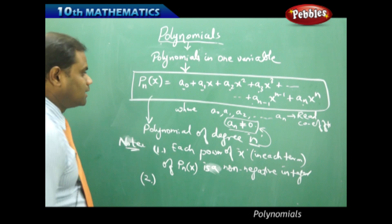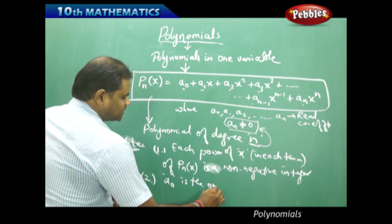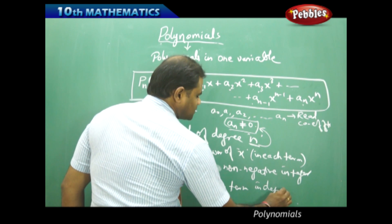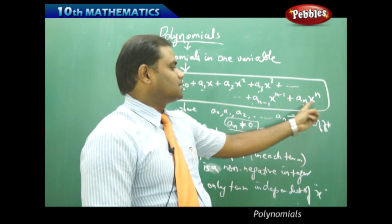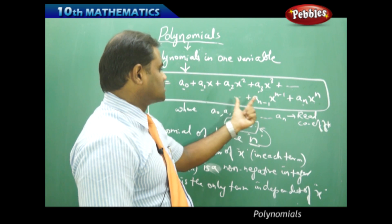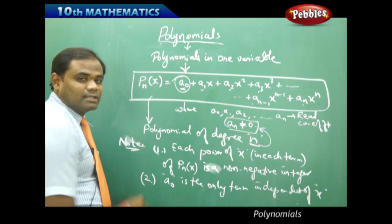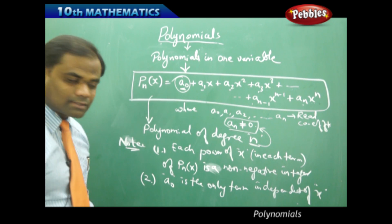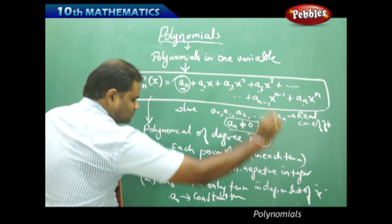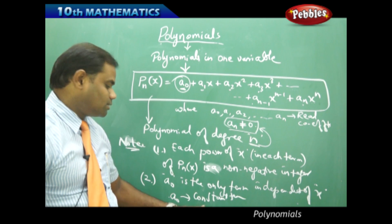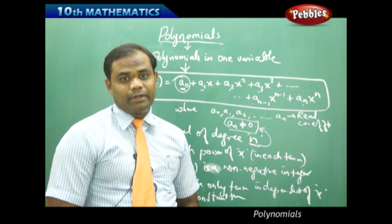Secondly, A0 is the only term independent of x. Each of the other terms contains x — for example, the second term has x, and the second last term also has x. But the speciality of the first term is that it is a constant term; it is the only term independent of x, and hence it is called the constant term.